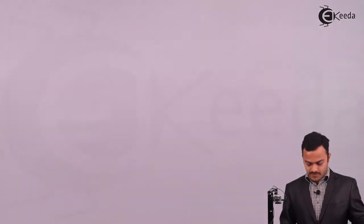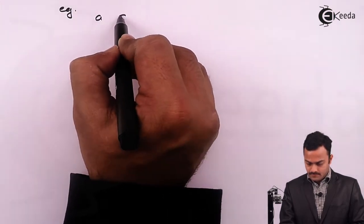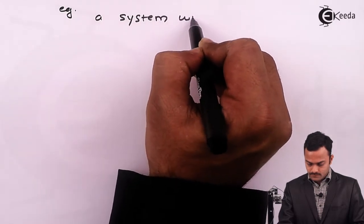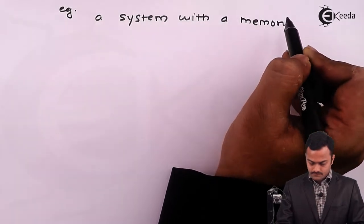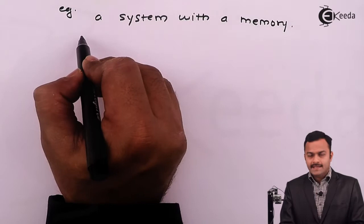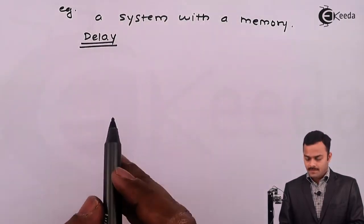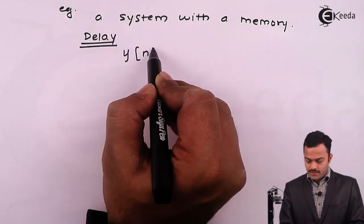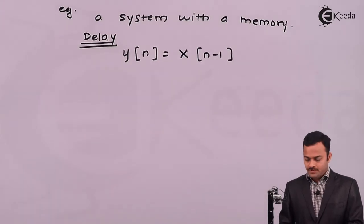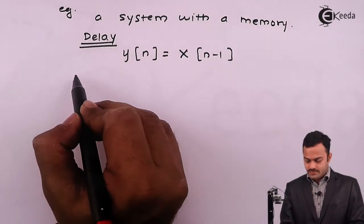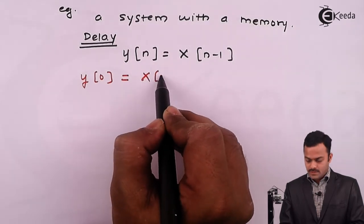Let's write an equation for system with memory. Example of a system with memory: a simple example is delaying any sequence. For example, delay of input signal means system represented by y of n is nothing but x of n minus 1. See the problem now, suppose I want to know what is y of 0. As per this system equation, y of 0 is nothing but x of minus 1.